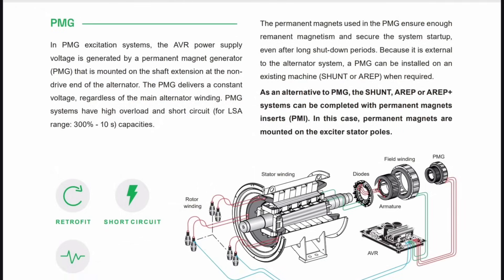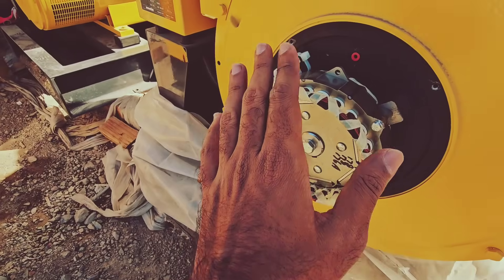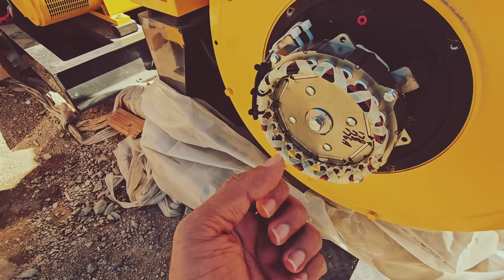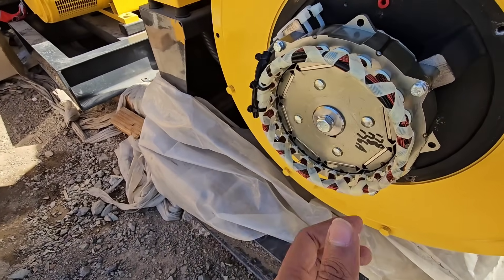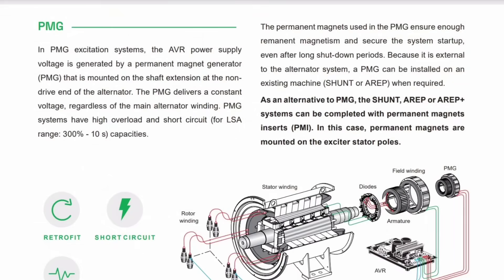The second type is the PMG excitation system, which is widely used in industrial generators. A small permanent magnet generator, PMG, is mounted on the same shaft as the alternator. This PMG produces a small AC voltage independently from the main alternator, which is sent directly to the AVR. The AVR converts this AC into DC and excites the rotor winding completely independent from the alternator's main voltage. PMG systems don't need residual magnetism to start and provide much better voltage stability during sudden load changes or short circuits. That's why PMG alternators are used in critical applications like hospitals, data centers, and industrial backup generators.